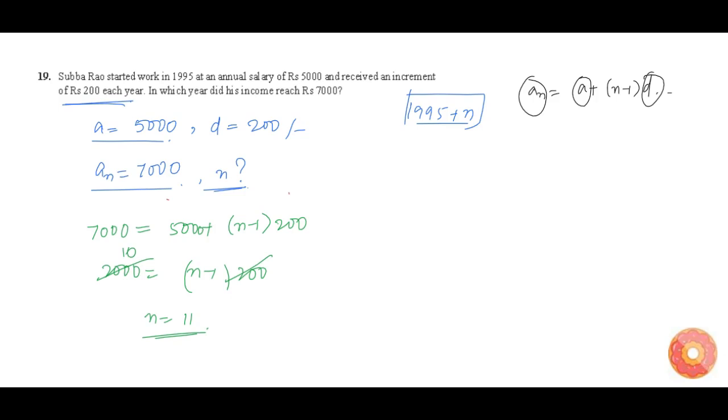After 11 years, his income will reach 7000 rupees. 1995 plus 11 equals 2006. Therefore, in the year 2006 his income will reach 7000 rupees. This is our answer.